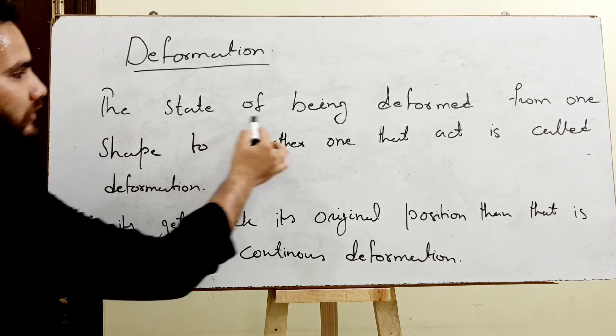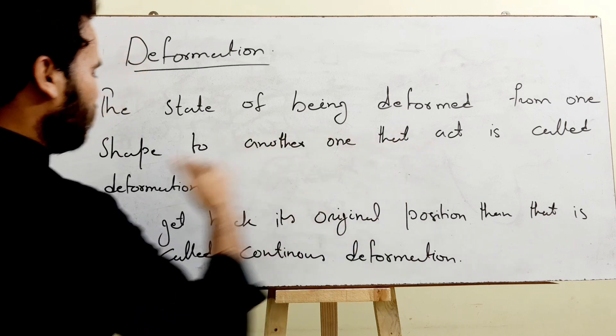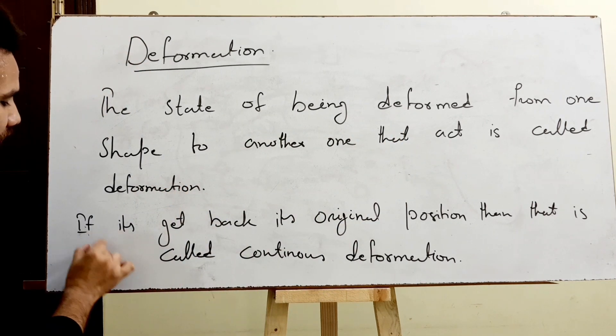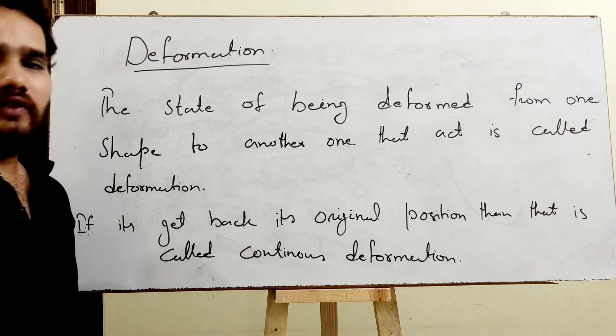The state of being deformed from one shape to another one, that act is called deformation. And if it gets back to its original position, then that is called continuous deformation.